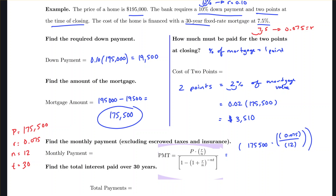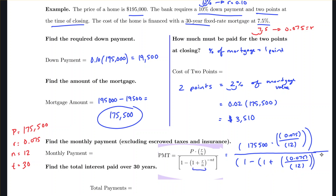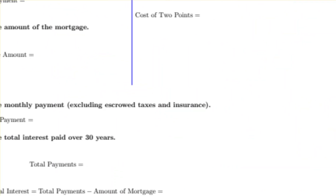If you have a graphing calculator, this much care with parentheses is less critical, but with a simpler calculator the parentheses ensure fractions stay together. The denominator is: 1 minus the quantity (1 plus (0.075 divided by 12)) raised to the exponent negative 12 times 30, with one final closing parenthesis for the bottom of the fraction.